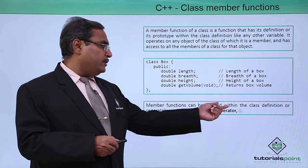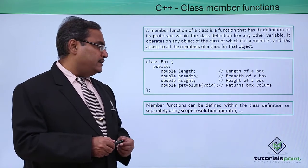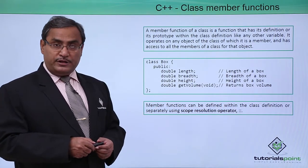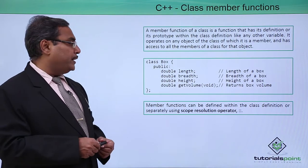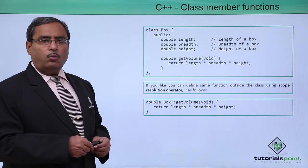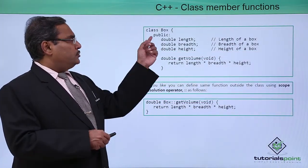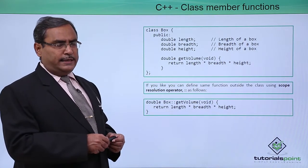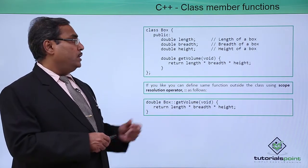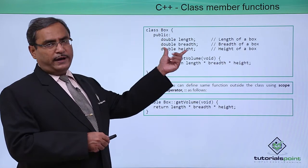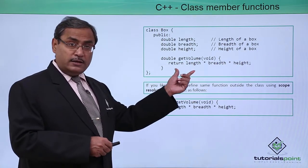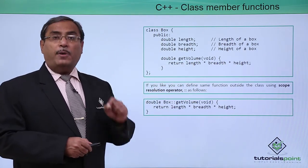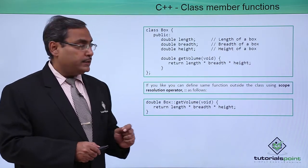Member functions can be defined within the class definition or separately using the scope resolution operator. Now let us go through a practical example. Here we have one class; the name of the class is box. Under the public section, we define three variables, and here we are not defining only the function prototype but we are writing the function body here.